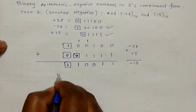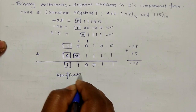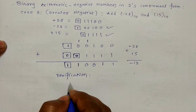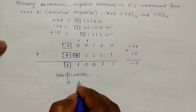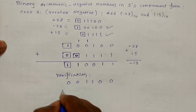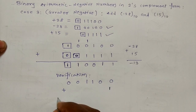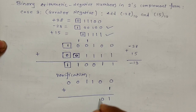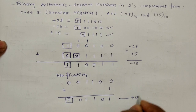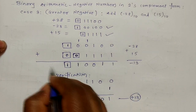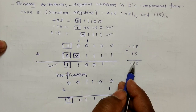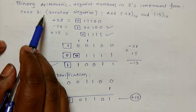To verify the result, take the two's complement of the result. First take the one's complement: 0 0 1 1 0 0; then add 1 to get 0 0 1 1 0 1, which is plus 13. This verification confirms our result. The actual result remains minus 13 in two's complement form.